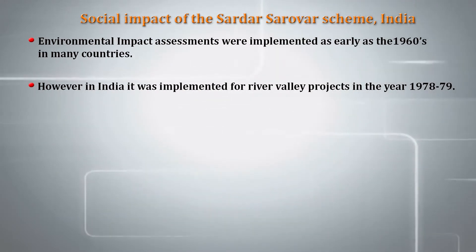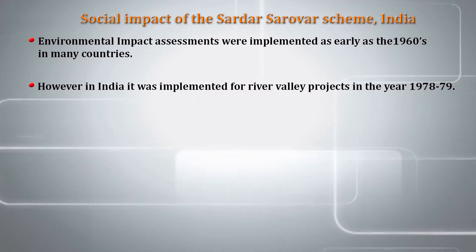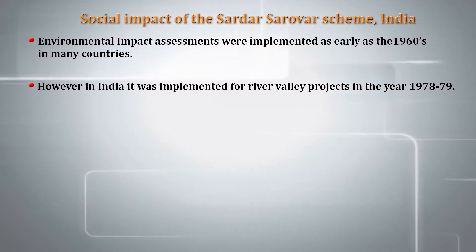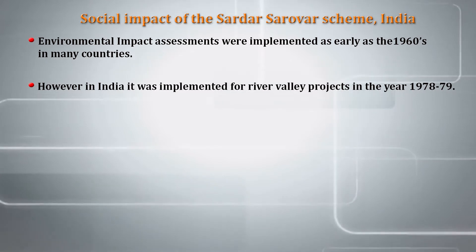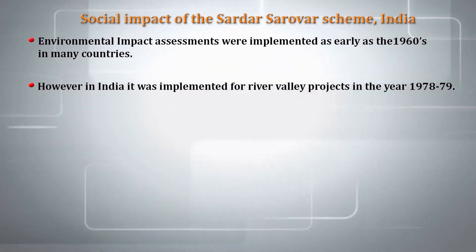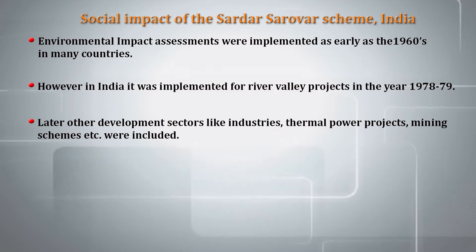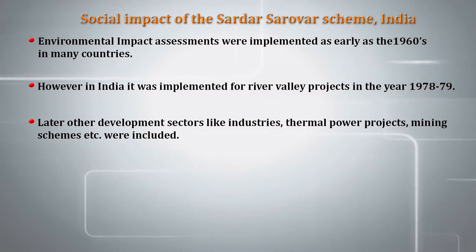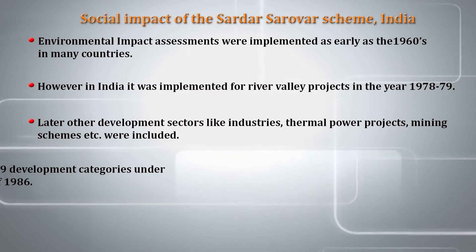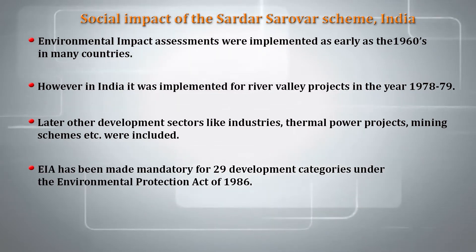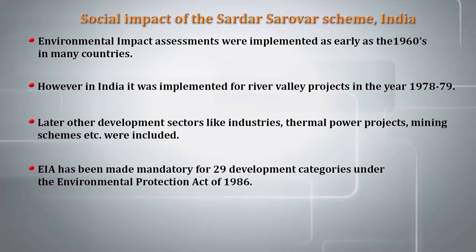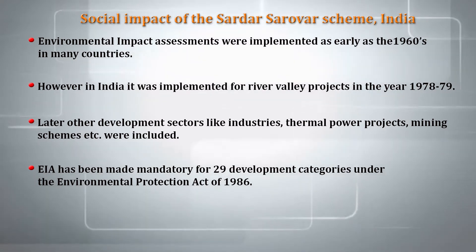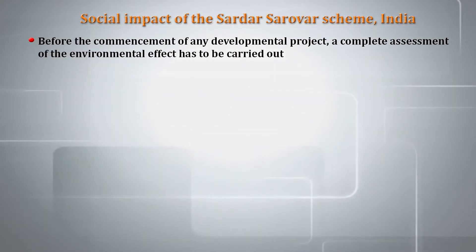Environmental impact assessments were implemented as early as the 1960s in many countries. However, in India, it was implemented for the River Valley project in 1978-79, and later other developmental sectors like industries, thermal power plants, and mining schemes were included. EIA has been made mandatory for 29 development categories under the Environmental Protection Act of 1986, and before the commencement of any developmental project, a complete assessment of the environmental effect has to be carried out.